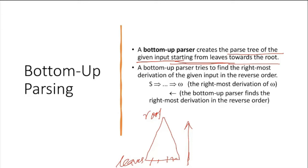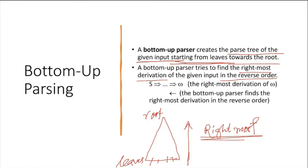There are many benefits we'll see slowly. A bottom-up parser tries to find the rightmost derivation of the given input in reverse order. In top-down parsing, we had only leftmost derivation, but in bottom-up parsing we follow rightmost derivation in reverse order. So if we have S at the root and at the leaf we have a string omega, the rightmost derivation of W actually happens bottom-up — the parser finds the rightmost derivation in the reverse order.